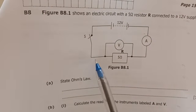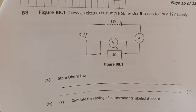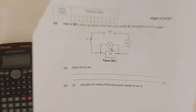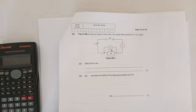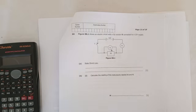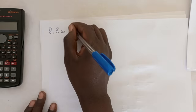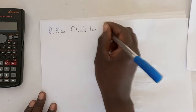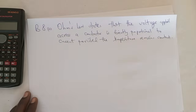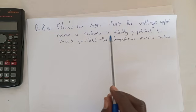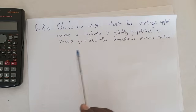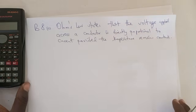The first question says: state Ohm's Law. Ohm's Law states that the voltage applied across a conductor is directly proportional to the current, provided the temperature remains constant. This is question B8a.